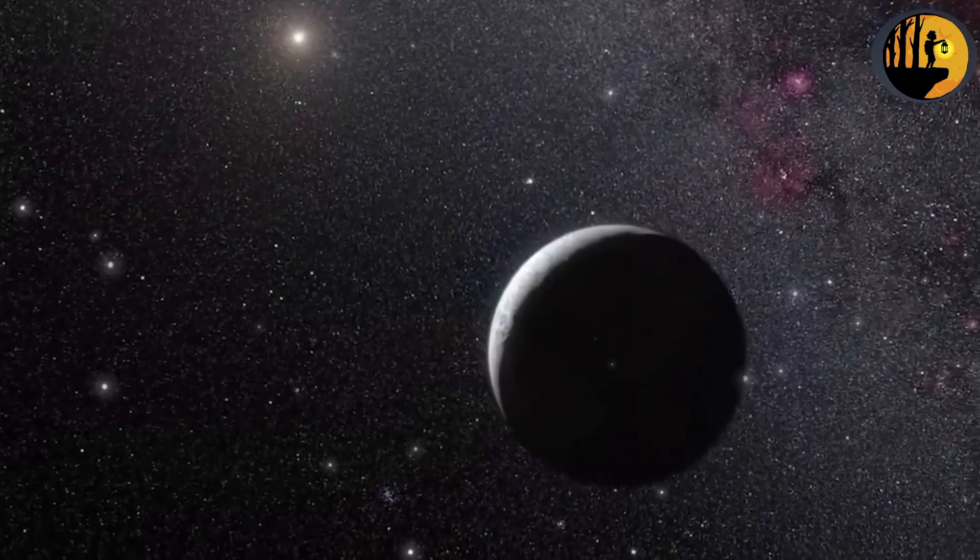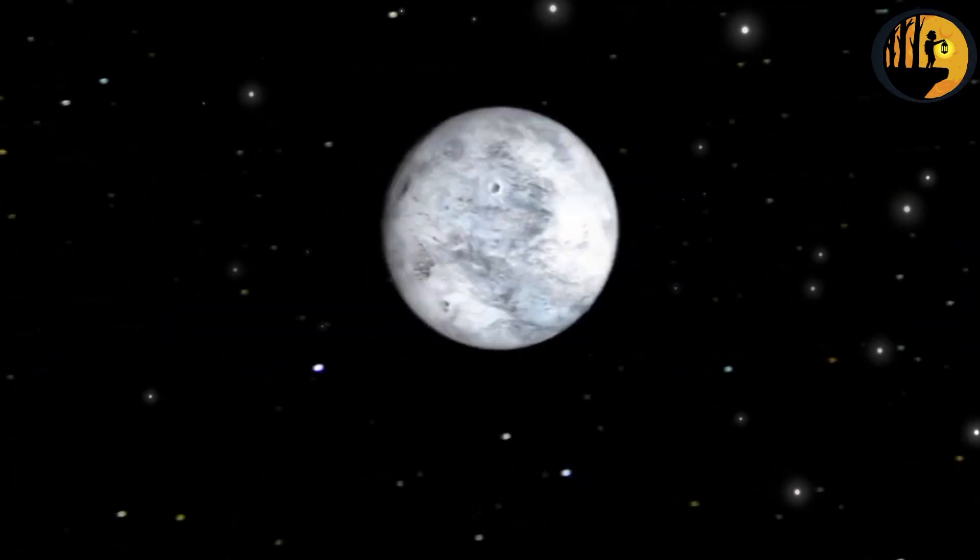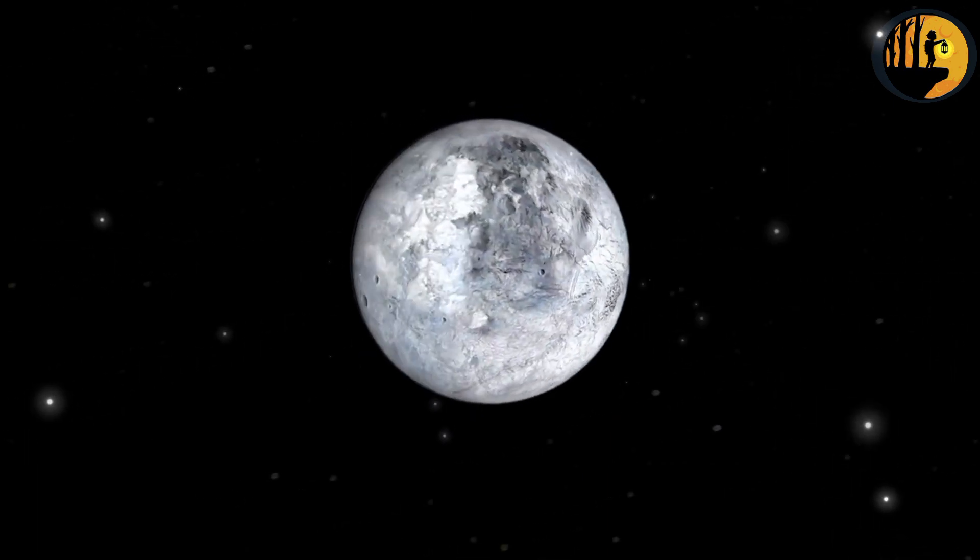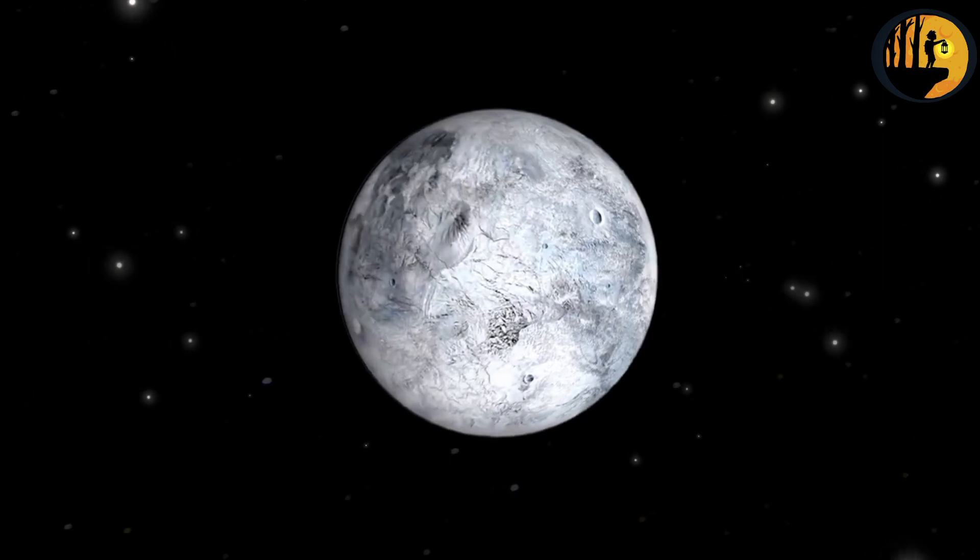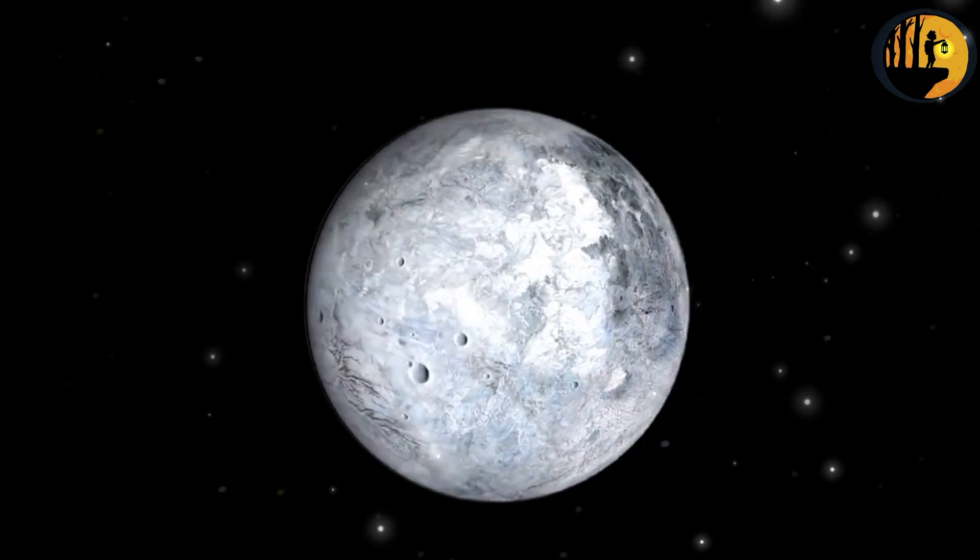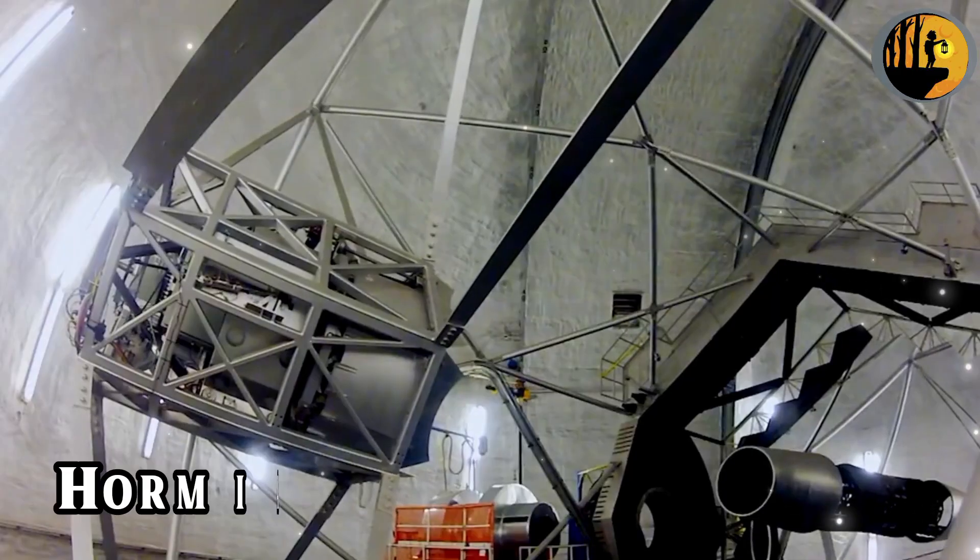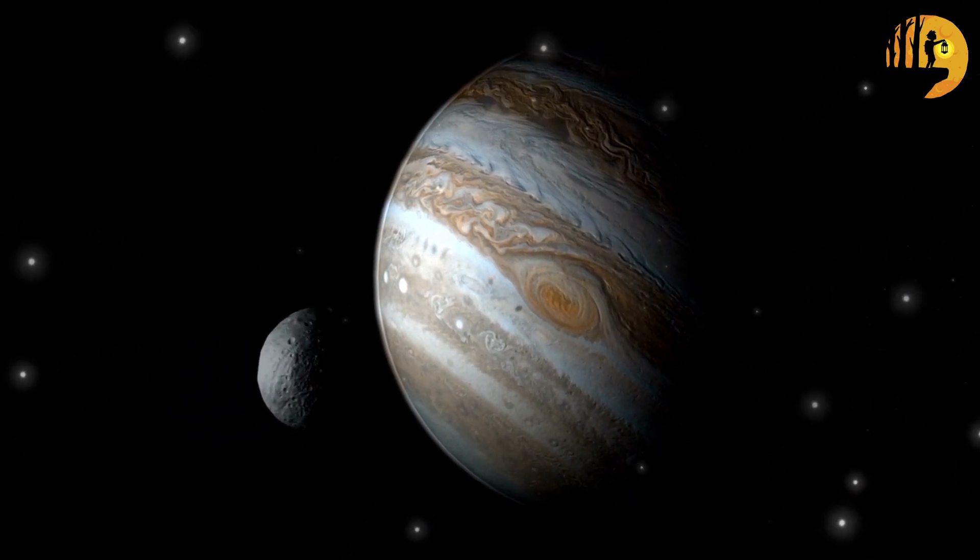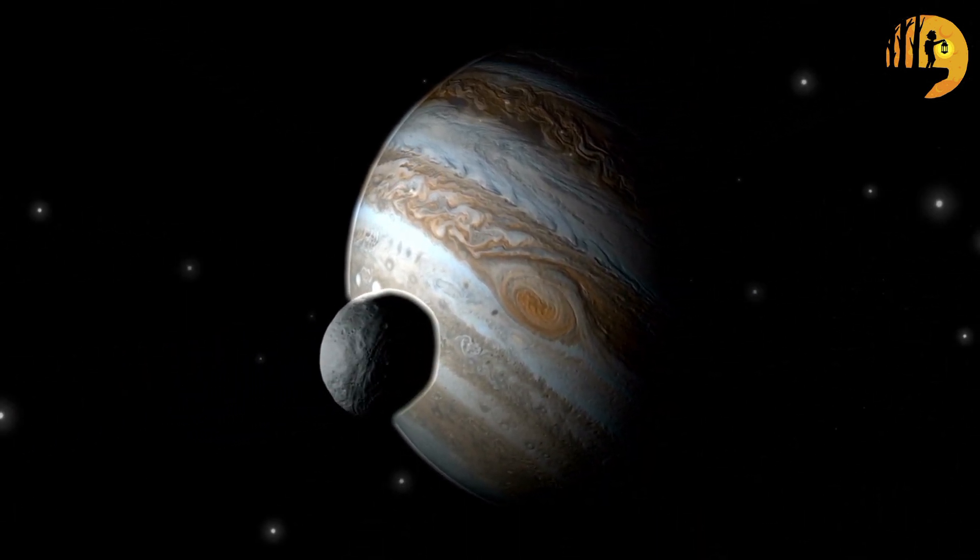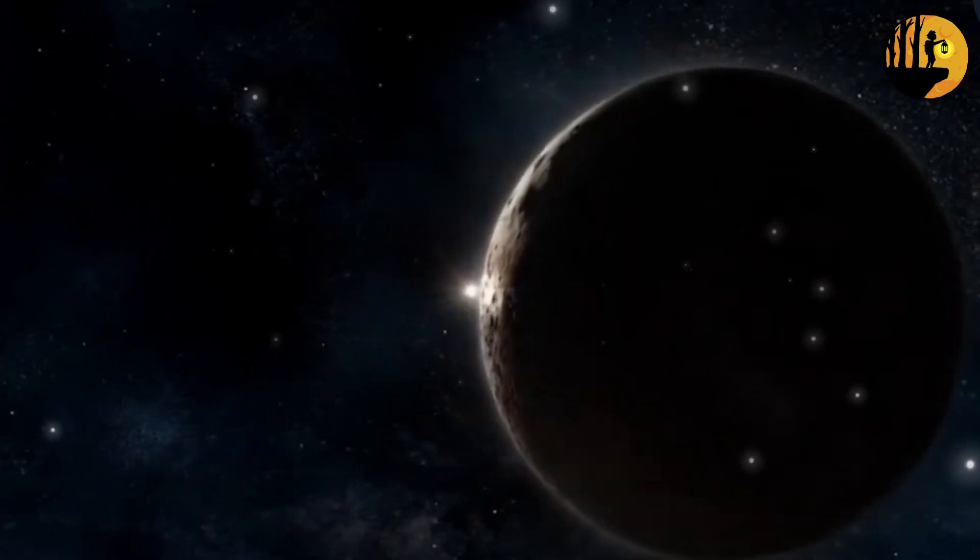Eris, also located in the Kuiper belt, is similar in size to Pluto and played a significant role in the reclassification of Pluto as a dwarf planet. Its discovery prompted a re-evaluation of the definition of a planet by the International Astronomical Union. Haumea, named after a Hawaiian goddess, is an elongated and rapidly rotating object in the Kuiper belt. It has a unique shape compared to other dwarf planets.